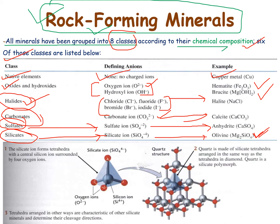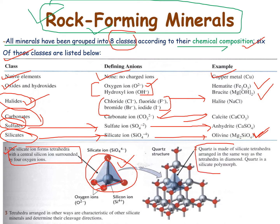Here we can see the crystallographic structure of these chemical species. The first shows that silicate ions form a tetrahedron with a silicon ion surrounded by four oxygen atoms. This is the kind of structure shown by silicate-type minerals, which are tetrahedral in structure. We can also see that quartz is made up of silicate tetrahedra arranged in the same way as the tetrahedra in diamond. Quartz is a silicate polymorph with this structure.